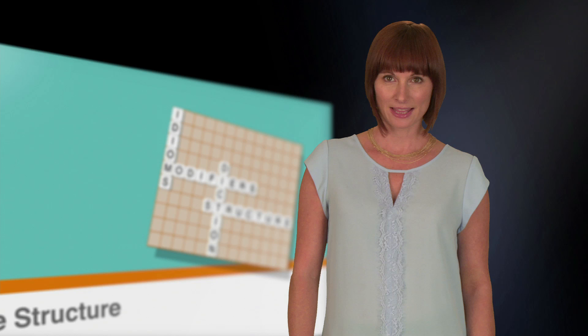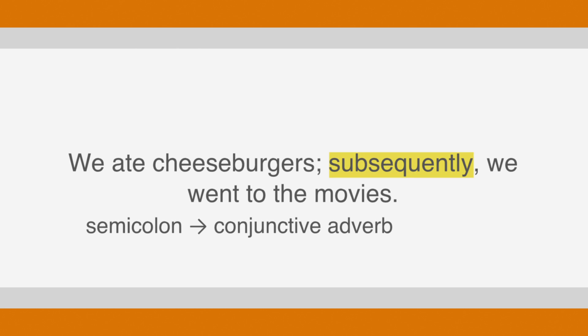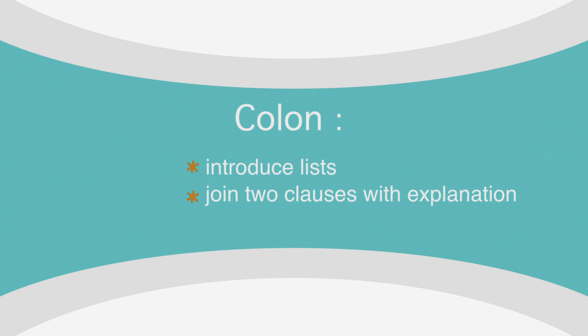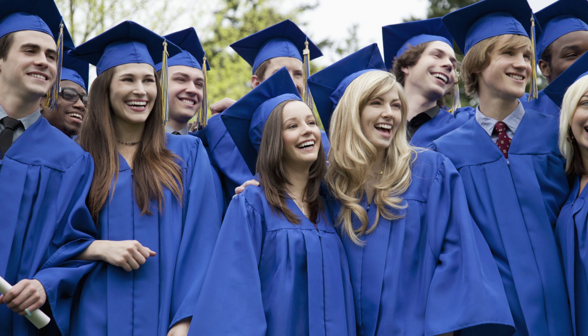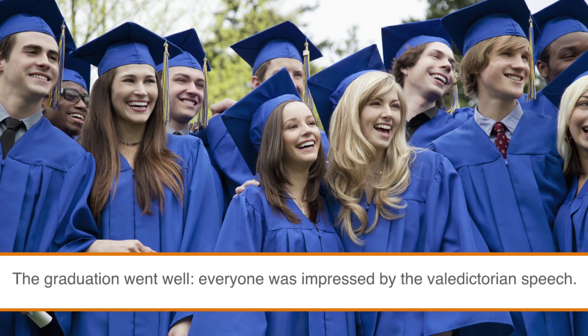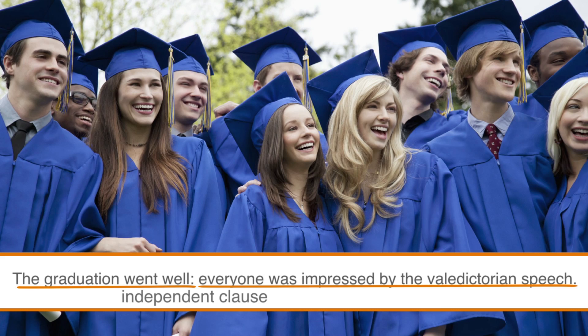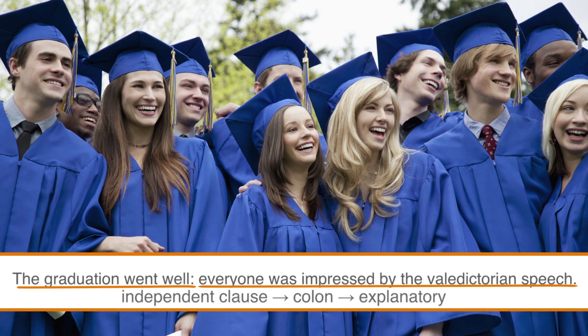The semicolon's cousin, the colon, actually works in the same way. Colons can be used to introduce lists and to join two independent clauses, but it implies that an explanation will follow. For example: 'The graduation went well: everyone was impressed by the valedictorian speech.' Both are independent clauses, but the second builds on the first — this is how colons work. The colon and semicolon are similar, so study each one along with clauses and FANBOYS, and you'll know everything about connectors and proper sentence structure.